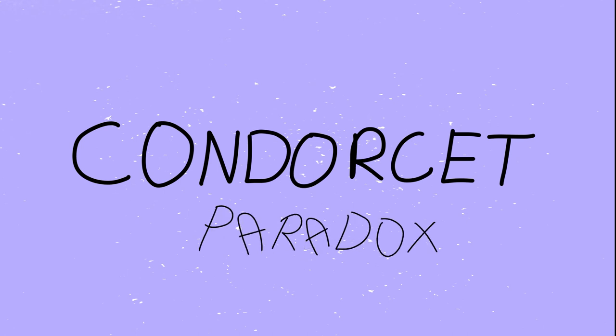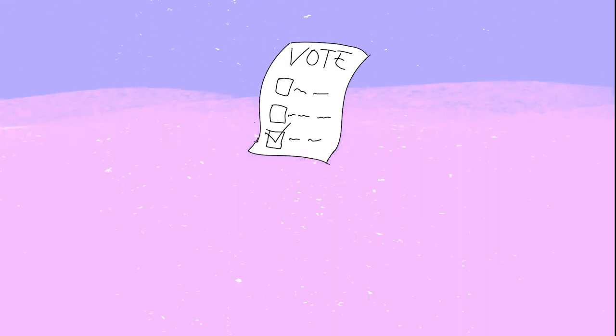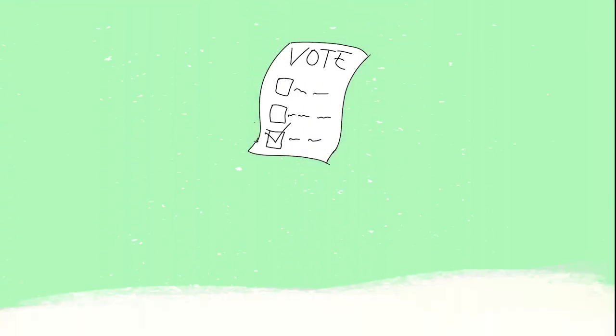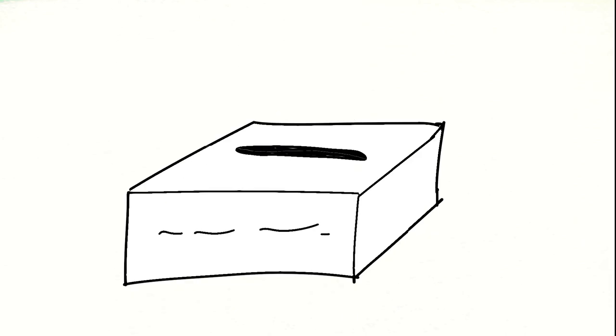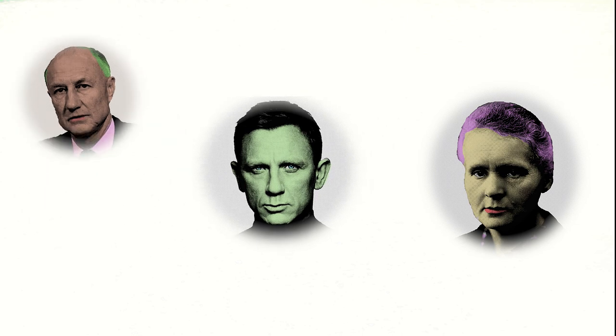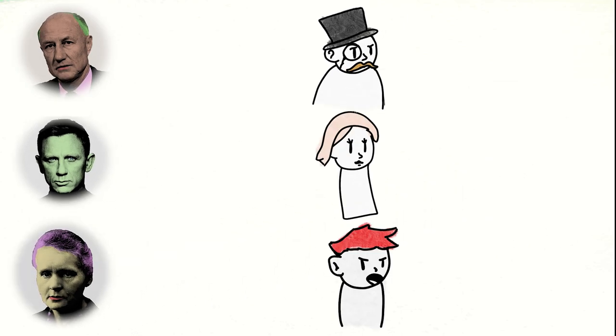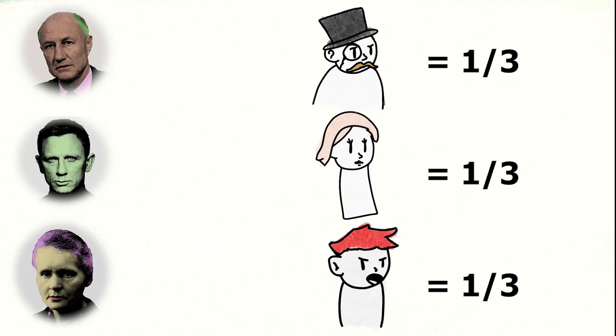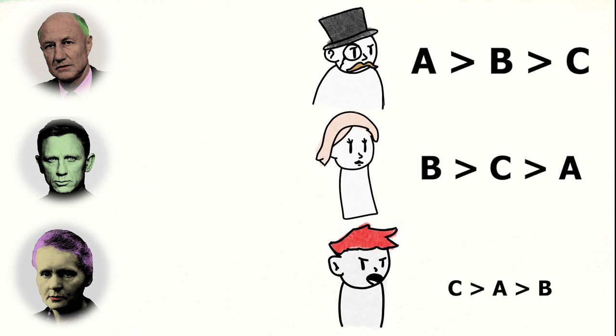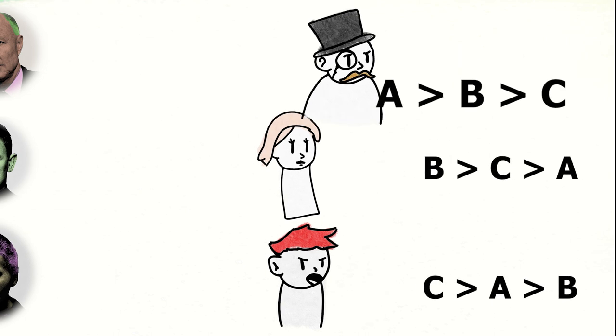The Condorcet paradox is an occurrence in social choice theory in which a population's preference can be in a state of deadlock. To describe it in the simplest case, let us imagine we had three individuals running for president and three groups of the population each being close to a third of the whole. Now let us suppose the following preferences for each of the groups.